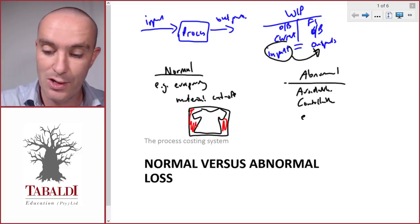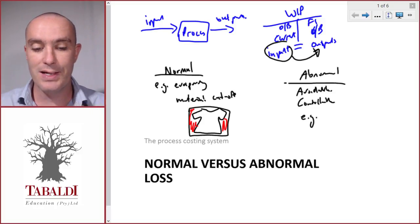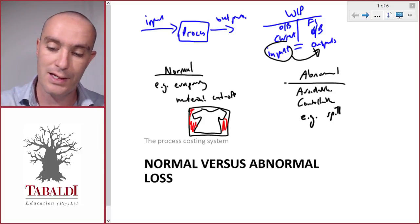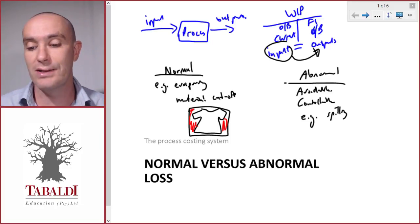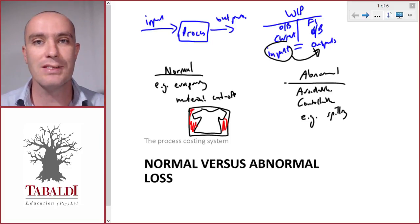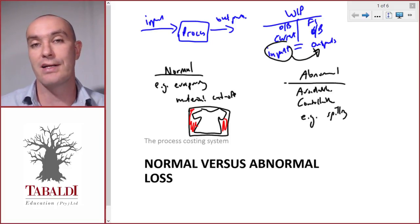Examples of abnormal losses might be spilling the chemicals. Rather than evaporating, we spill it on the floor by tripping over something. Something needs to be fixed so that it doesn't happen again.